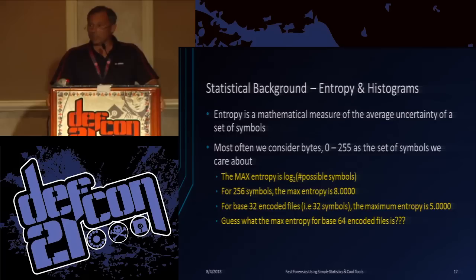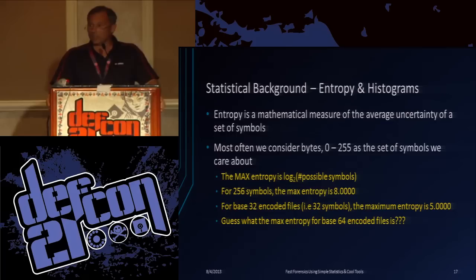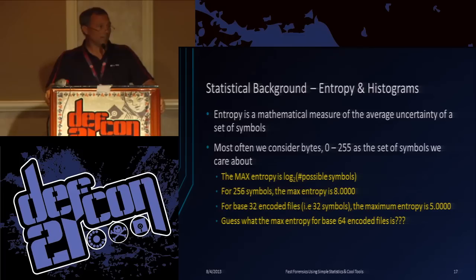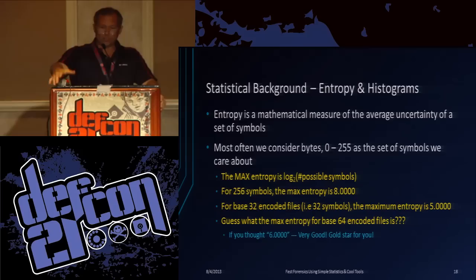Who's heard of entropy before and knows what it is? Looks like about half. What about a histogram - do you all know what a histogram is? About the same people. Usually we consider bytes with computers - zero to 255. So the maximum entropy is the log base 2 of the total number of symbols. Log base 2 of 256 different symbols is 8. So maximum entropy for a file can be 8. If that file is base 32 encoded, maximum entropy is going to be 5. You can actually tell if the base 32 encoding has encoded an encrypted file or a text file just by using this tool. And for base 64 - that's a little quiz - 2 to the 6 is 64.